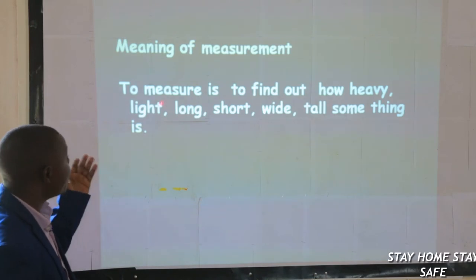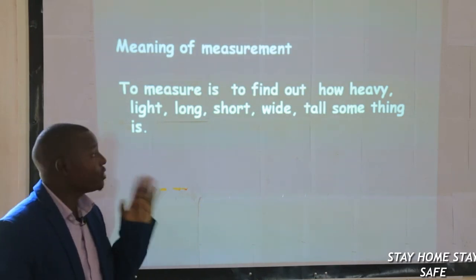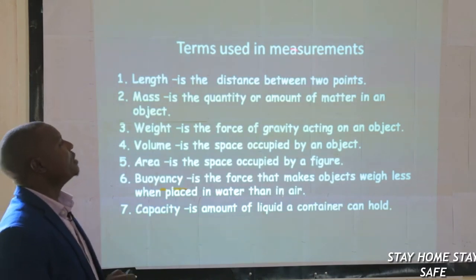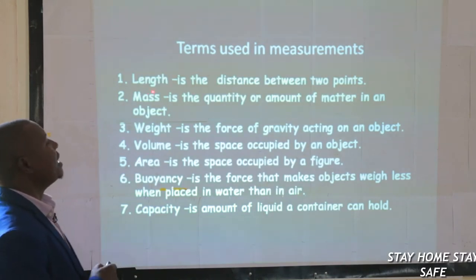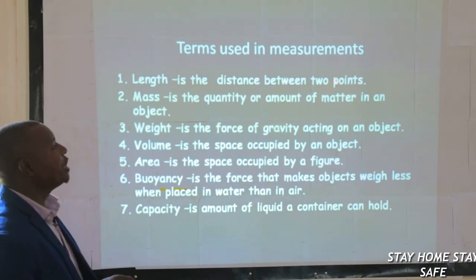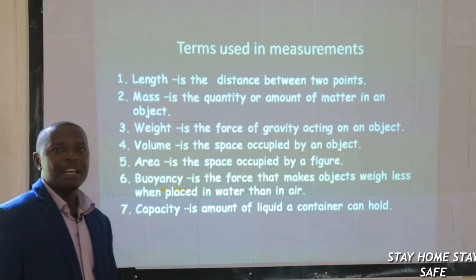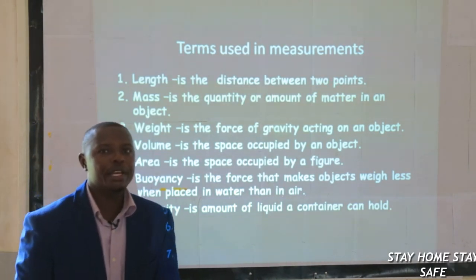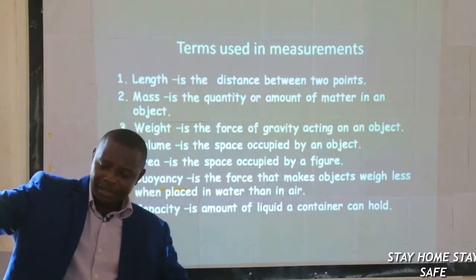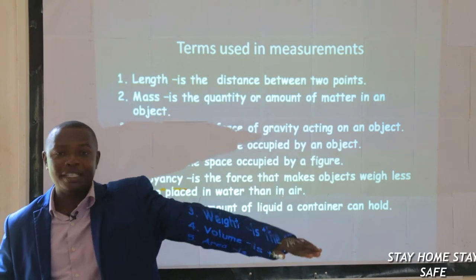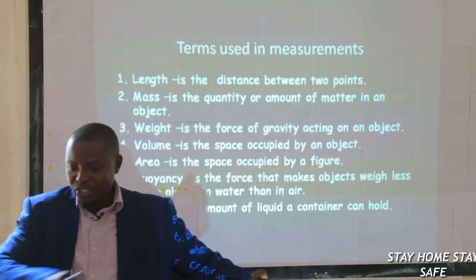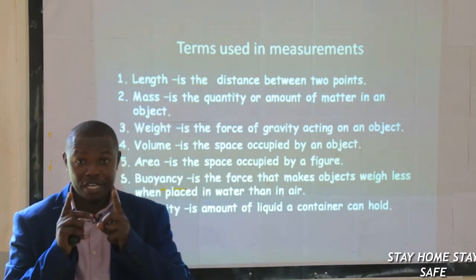So let's look at the terms that are used in measurements. One: there is length. Length is the distance between two points. Look at your table — this end part and the last part, the other part. That distance which is between the two points is what we are calling length.